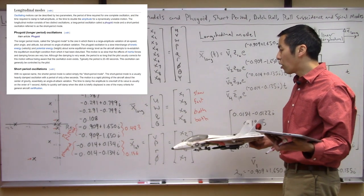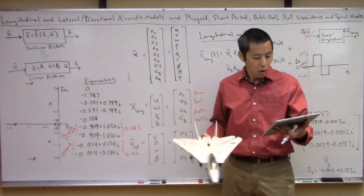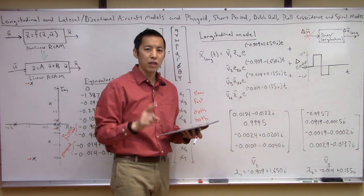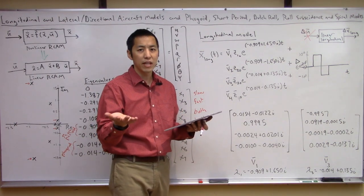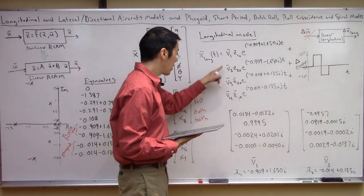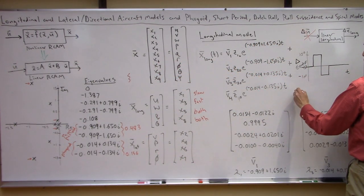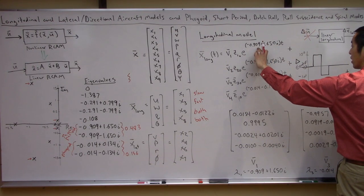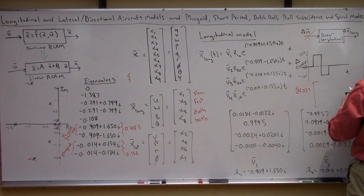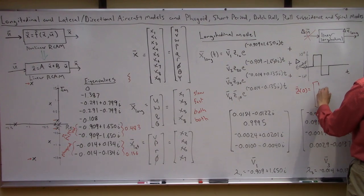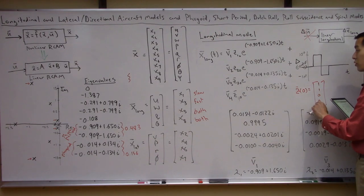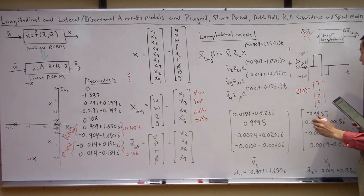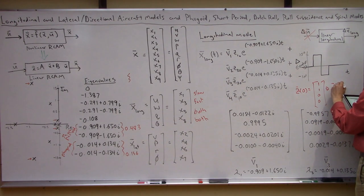What's fascinating is we now know we can excite either of these modes to see them displayed in the aircraft response. If we choose to excite just the short period mode — using an initial condition in modal space Z-zero of [1, 1, 0, 0], the zeros knock out the phugoid terms — we need to translate this into an initial condition in X via the modal similarity transformation. I computed this to be approximately [0.03, 1.99, −0.0048, 0.0199]. This is a bit of an academic exercise where you'd need to set the aircraft's initial U, W, Q, and Theta to those specific values.